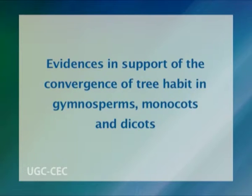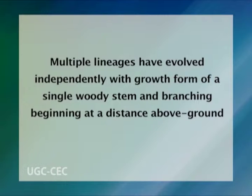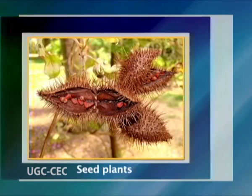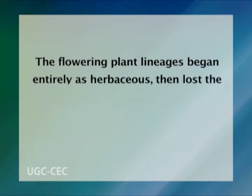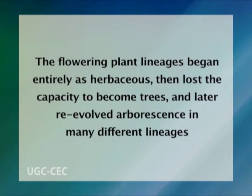Multiple lineages have evolved independently a growth form of a single woody stem with branching beginning at a distance above the ground — the form that characterizes trees. It is now believed beyond any doubt that the Paleozoic tree forms of club mosses, horsetails and seed plants — cycads and gymnosperms — evolved independently. Some evolutionary theorists even conclude that the flowering plant lineage began entirely herbaceous, having lost the capacity to become trees, and then later re-evolved arborescence in many different lineages.